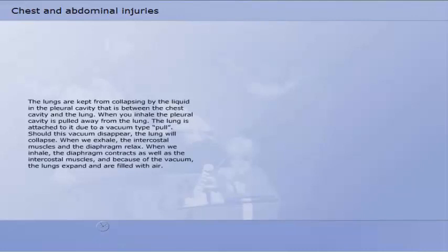The lungs are kept from collapsing by the liquid in the pleural cavity that is between the chest cavity and the lung. When you inhale, the pleural cavity is pulled away from the lung. The lung is attached to it due to a vacuum-type pull. Should this vacuum disappear, the lung will collapse. When we exhale, the intercostal muscles and the diaphragm relax. When we inhale, the diaphragm contracts as well as the intercostal muscles, and because of the vacuum, the lungs expand and are filled with air.